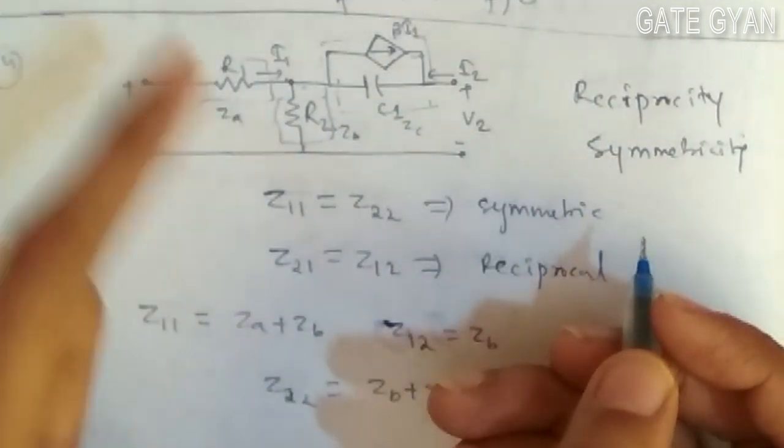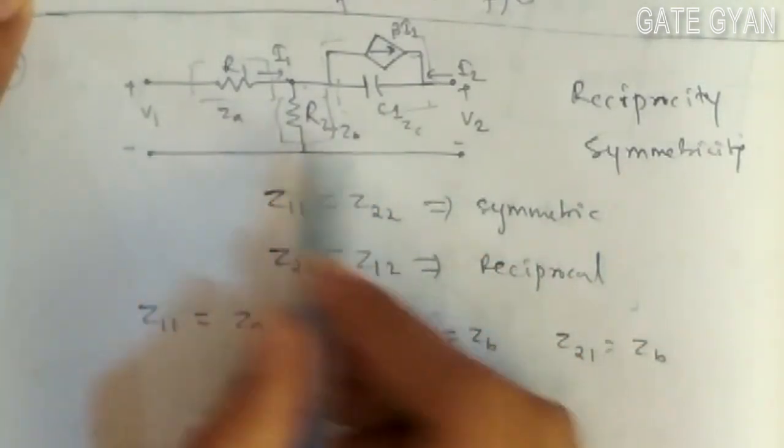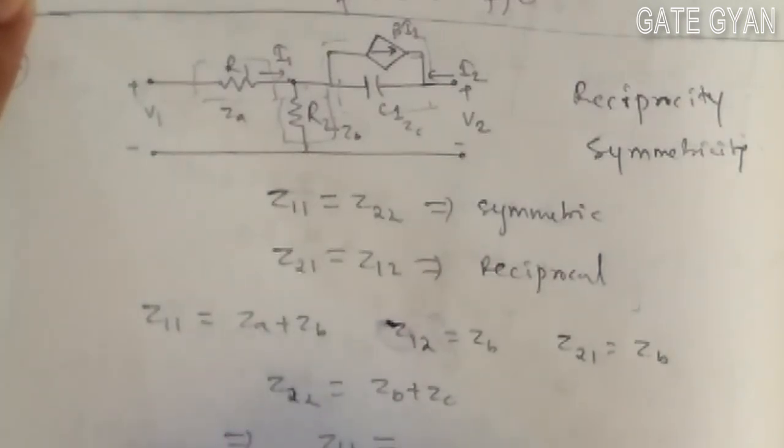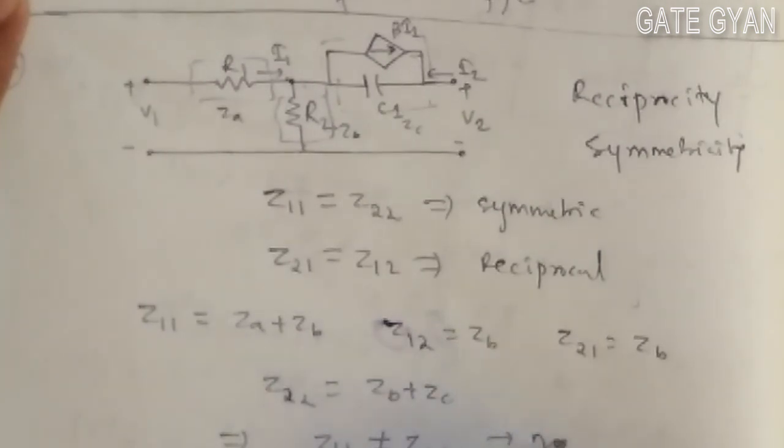From the network, we can see it's not going to be symmetrical because z11 will never equal z22. So it will be a non-symmetrical network.